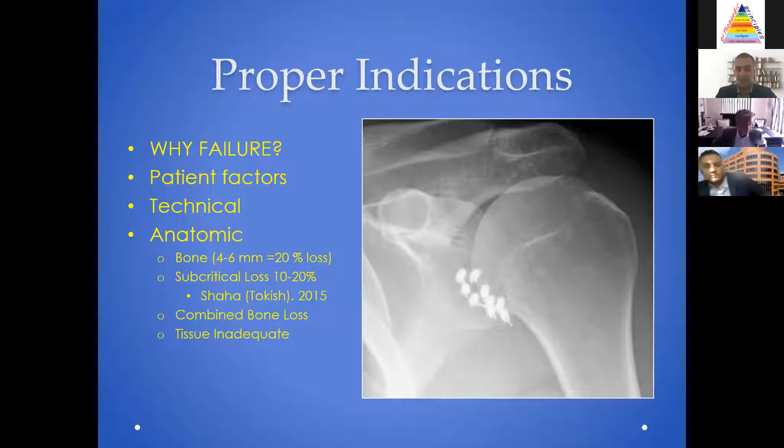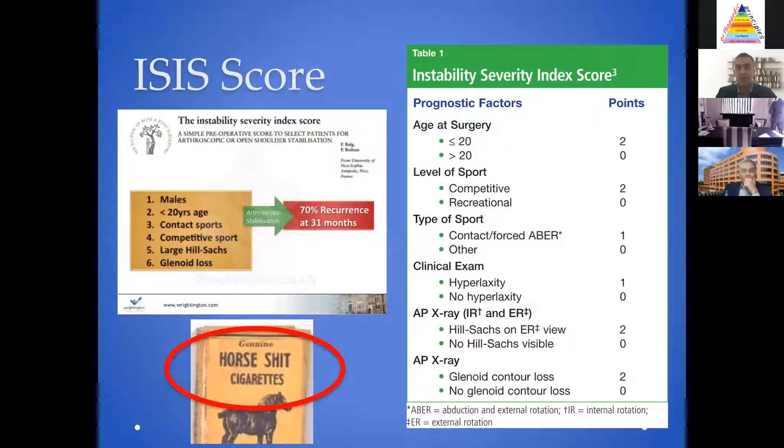We touched briefly on the ISIS score — an unfortunate name at the time. While I don't believe it plays a major role in selecting exactly how I do things, it does play a role in how I think about indicating surgery. And perhaps instead of Latarjet for all, there will be more of a role, as Dr. Murthy will talk about, for open shift for some.